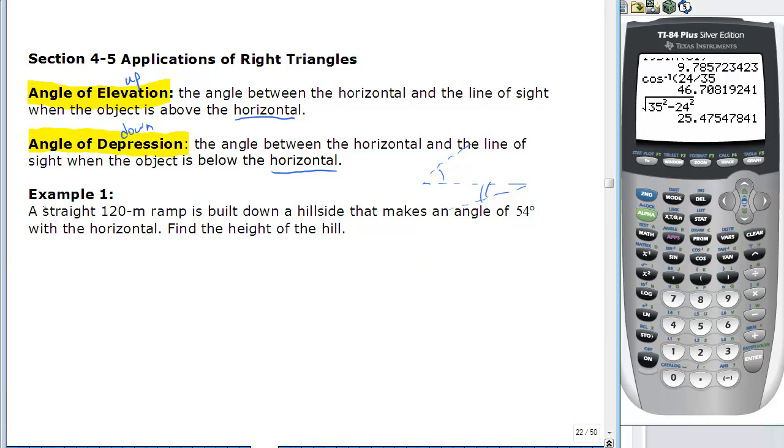In the first example, we have a straight 120 meter ramp built down a hillside that makes an angle of 54 degrees with the horizontal. So here's a ramp coming down a hill. We can put the hill here, this is the height of the hill, and the ground here. We get this nice 90 degree angle. We know the ramp is 120 meters, so that would be this side. The angle is with the horizontal, so we're talking about this angle.